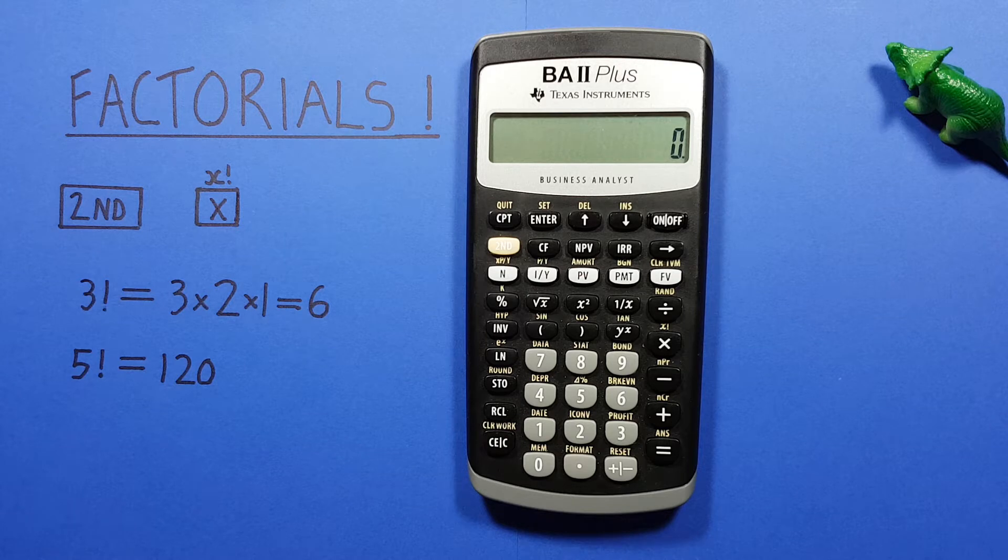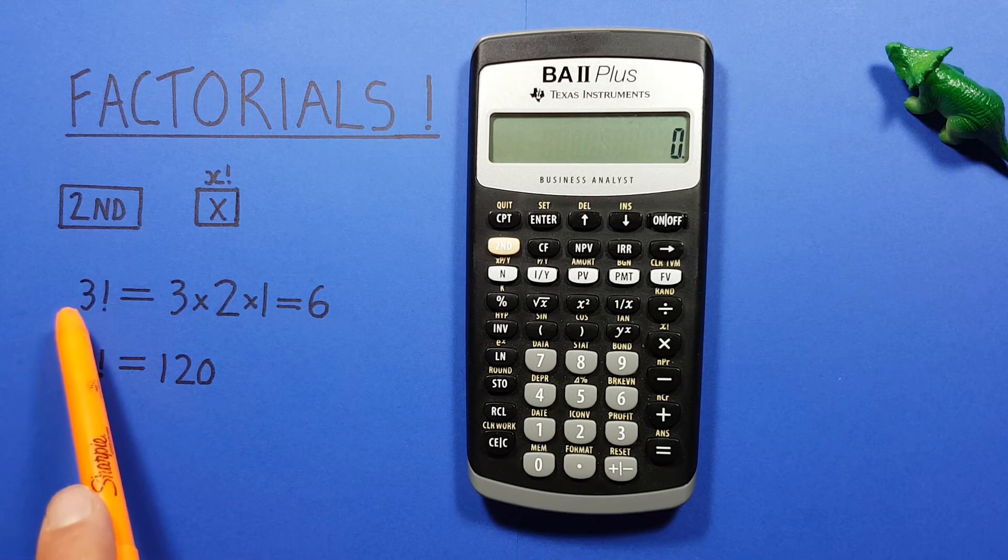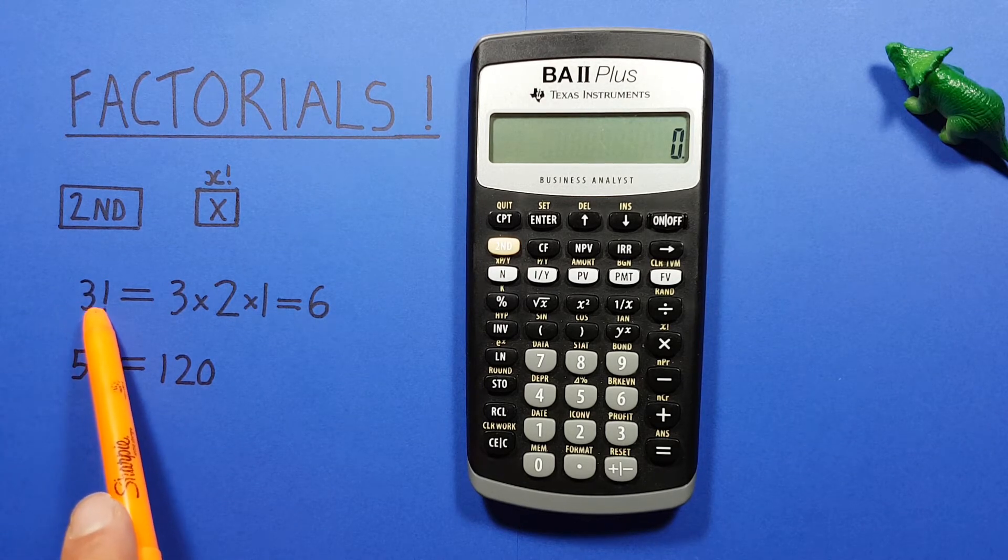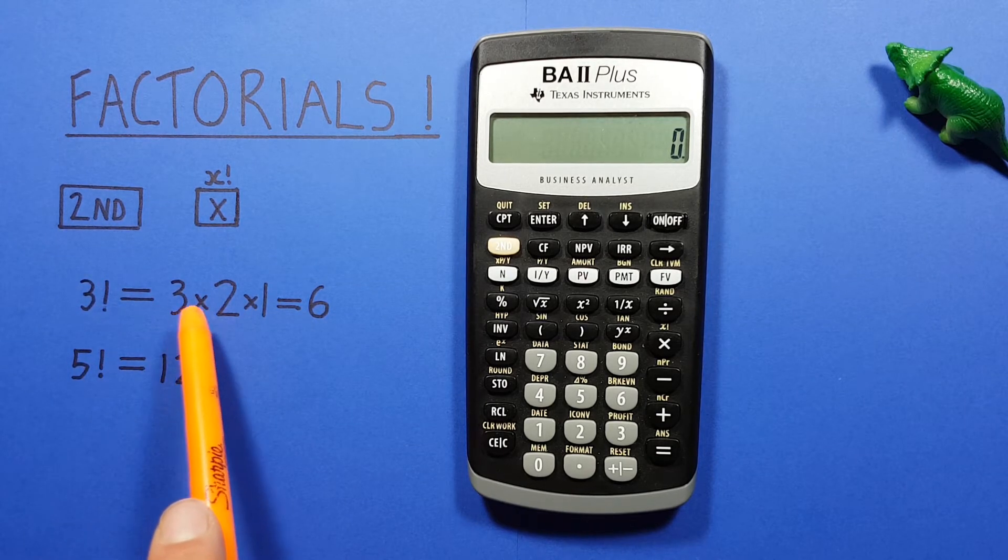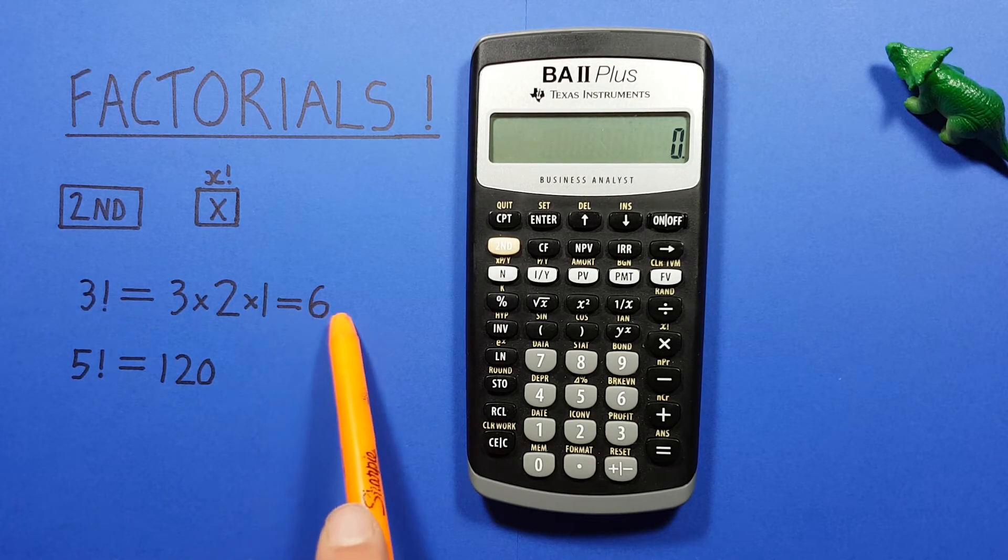We know that a factorial is the product of a number and all integers below it multiplied together. So if we wanted to find 3 factorial, we could just multiply 3 times 2 times 1 and we know that gives us 6.